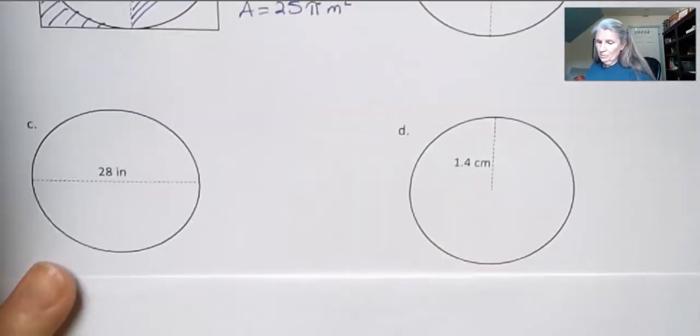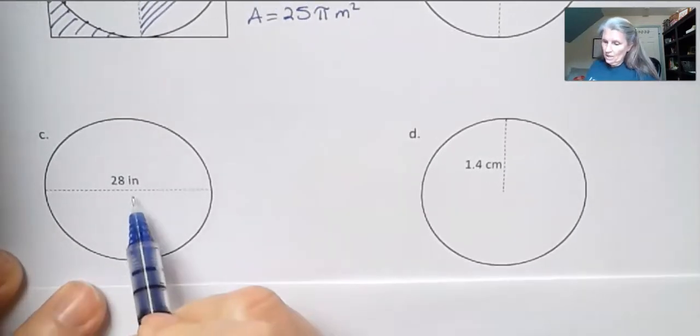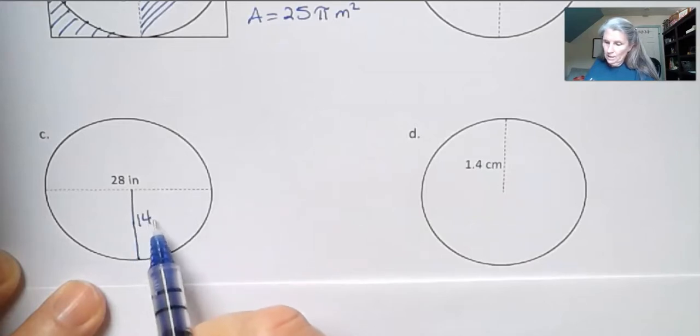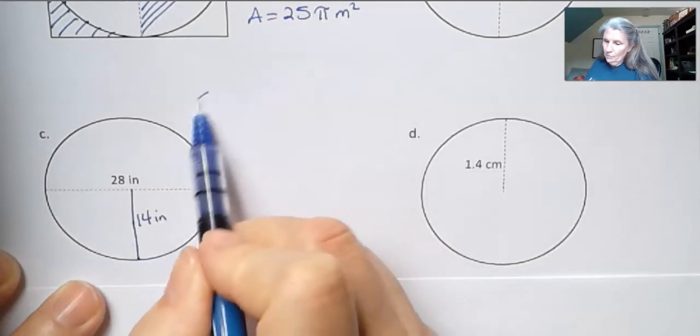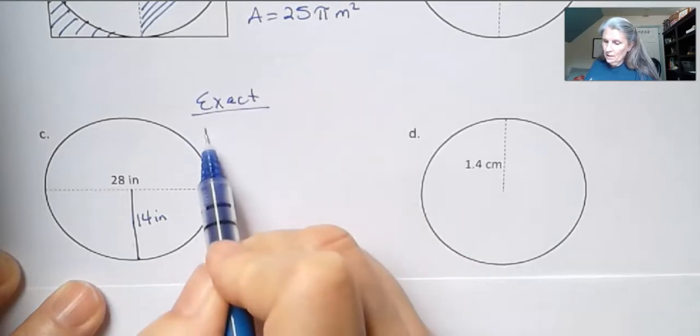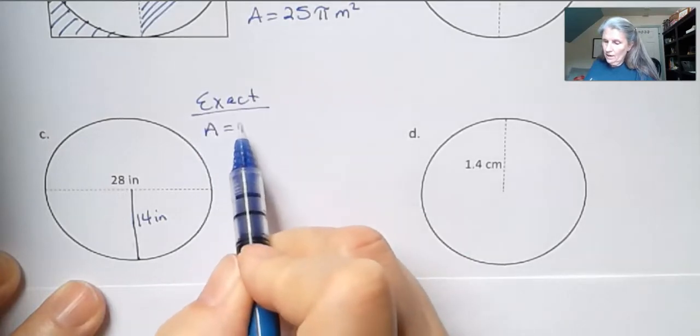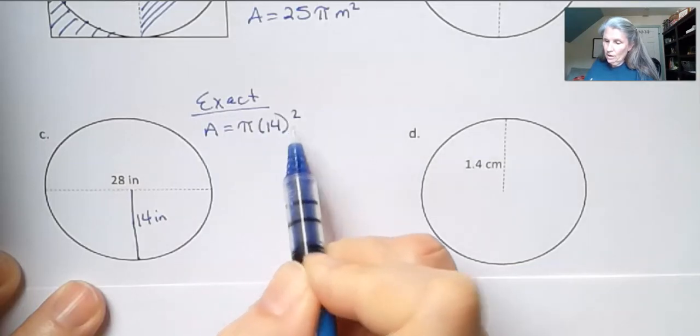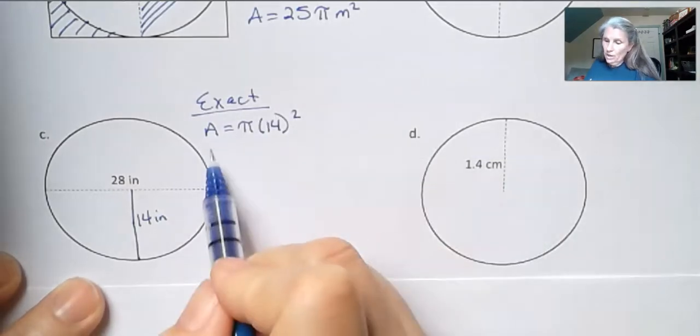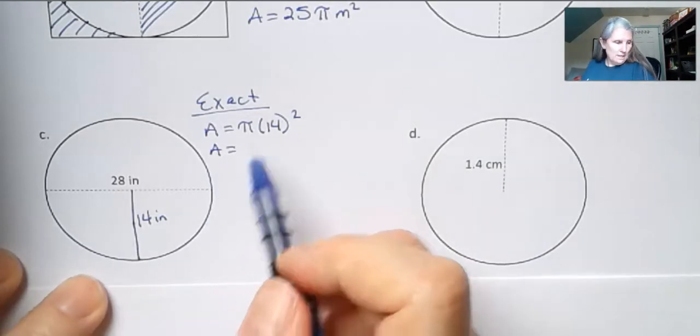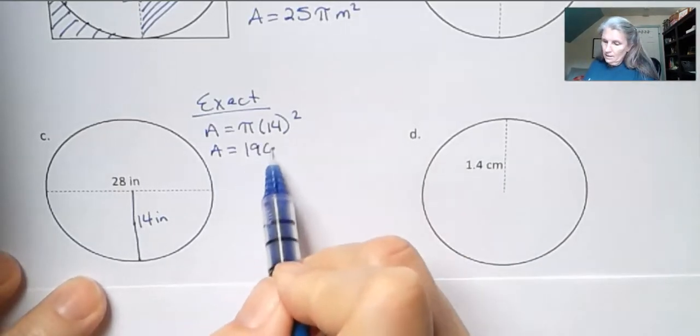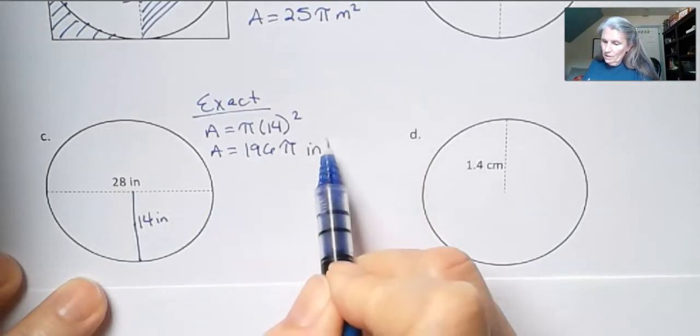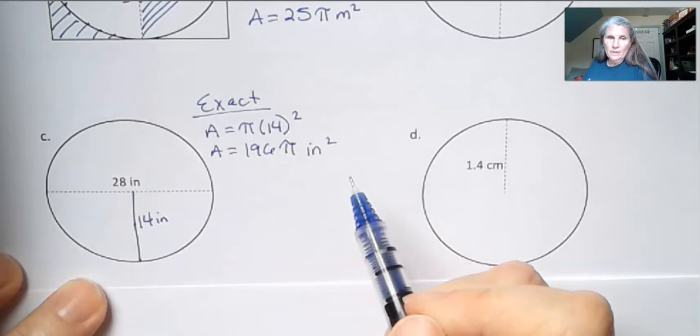The other two examples that I have. The first one is the diameter is 28. If the diameter is 28, half of that would be 14. For an exact answer, I would just take area equals pi times 14 squared. That's the radius. And what is 14 squared? It's 196 pi. And then what's my unit? It's inches squared. That's the exact.